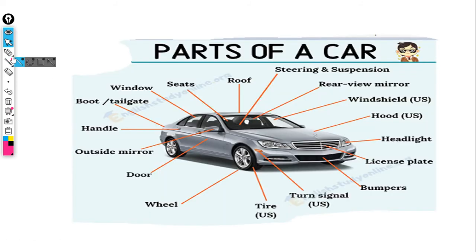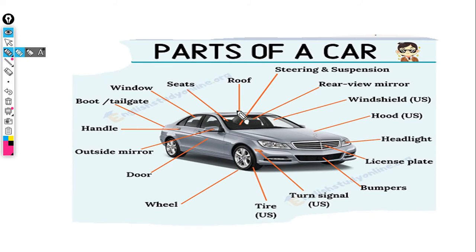This is the car part. This is the overall body. This is the bumper. This is the headlight. This is the hood or the bonnet. This is the windshield. This is the glass. This is the sunroof. This is the seat. This is the boot. You can see the rear wheel and the front wheel.